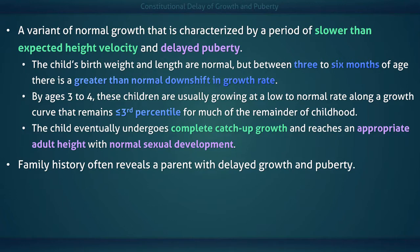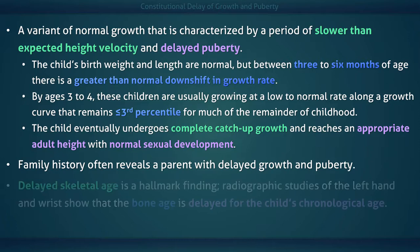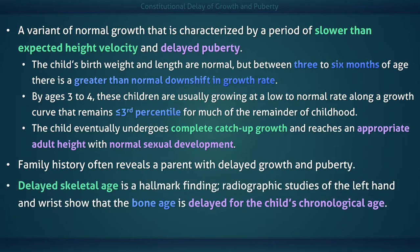Family history often reveals that a parent, commonly referred to as a late bloomer, also had delayed growth in puberty. Delayed skeletal age is a hallmark finding. Radiographic studies of the left hand and wrist show that the bone age is delayed for the child's chronological age.